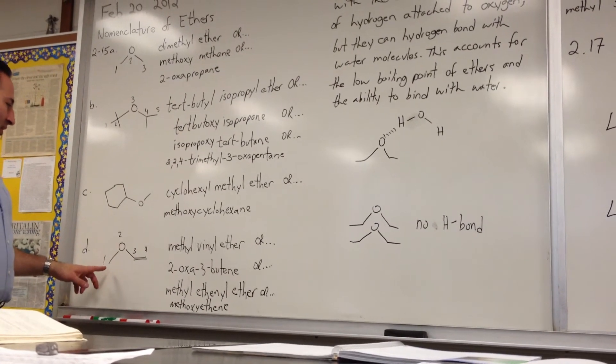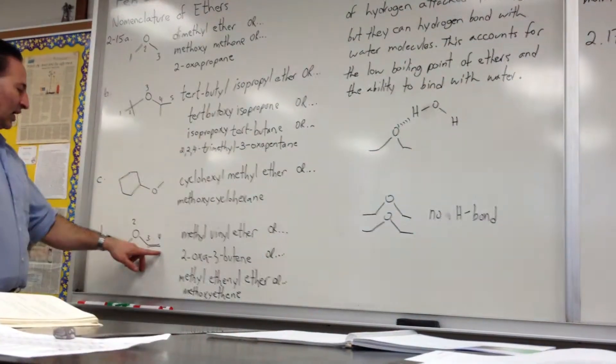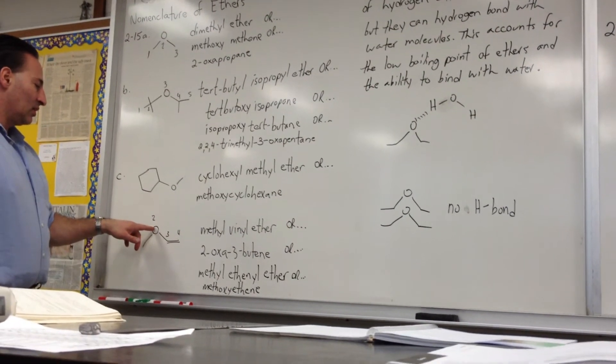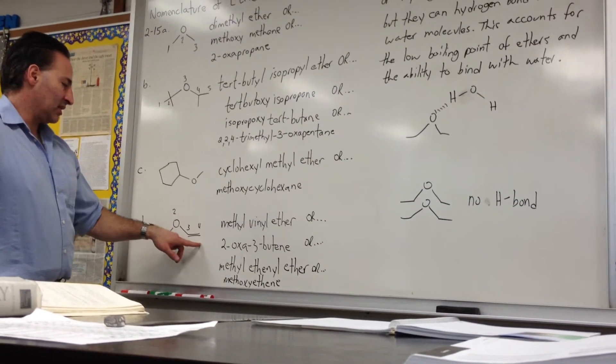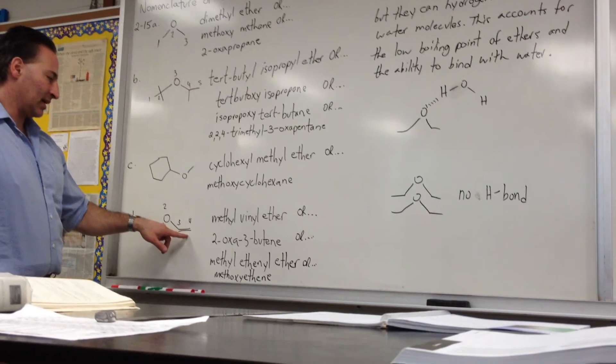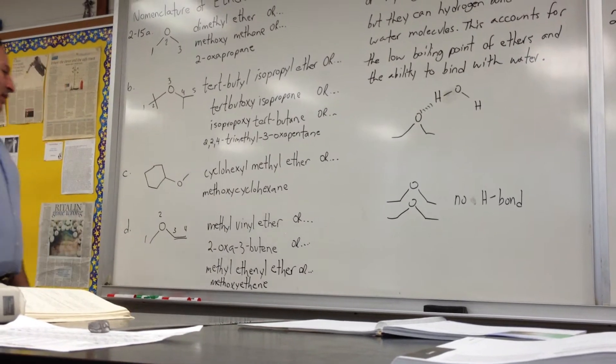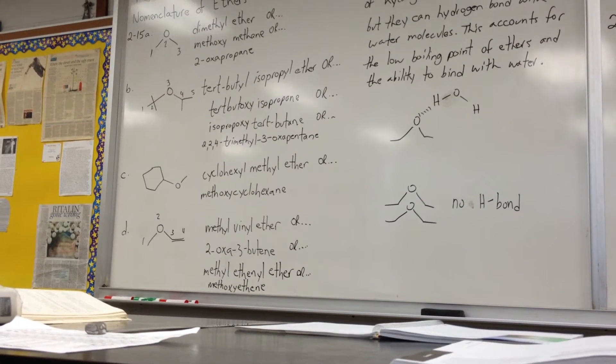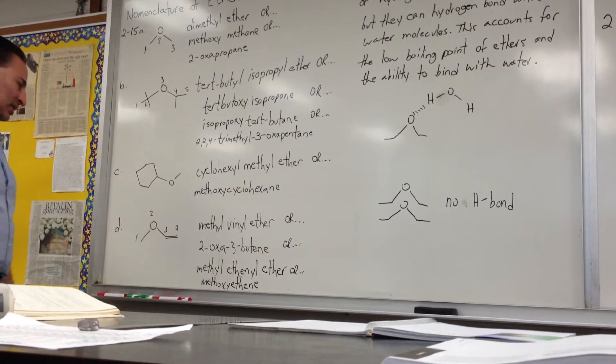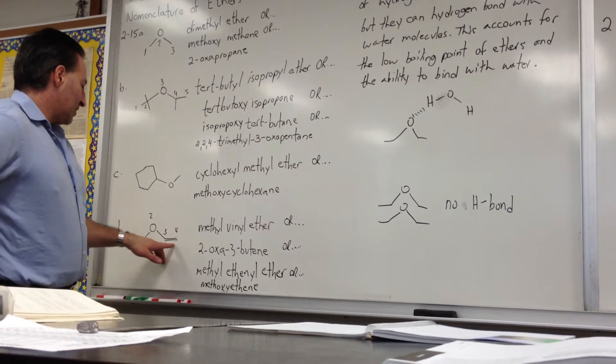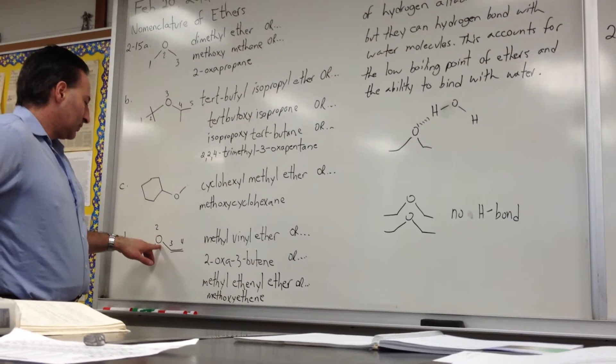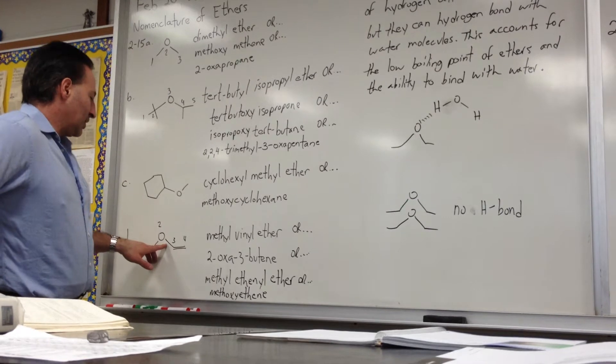And the last example is methylvinyl ether. You could also say methylethenyl. Ethenyl is the IUPAC name for a vinyl group, but it's okay to use the vinyl group because it's a trivial name and it tends to fit better. It tends to roll better when you name it. So methylethenyl ether. You could also say methoxyethene.